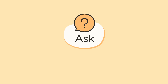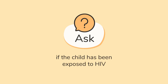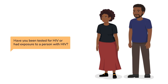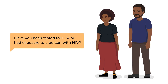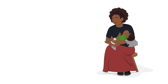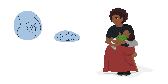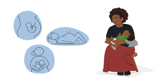First, find out if the child has been exposed to HIV. Ask the parents if they have been tested for HIV or have had exposure to a person with HIV. It's important for the mother to know her HIV status, as HIV can be transmitted from a mother to her infant during pregnancy, labor and delivery, and from breastfeeding.